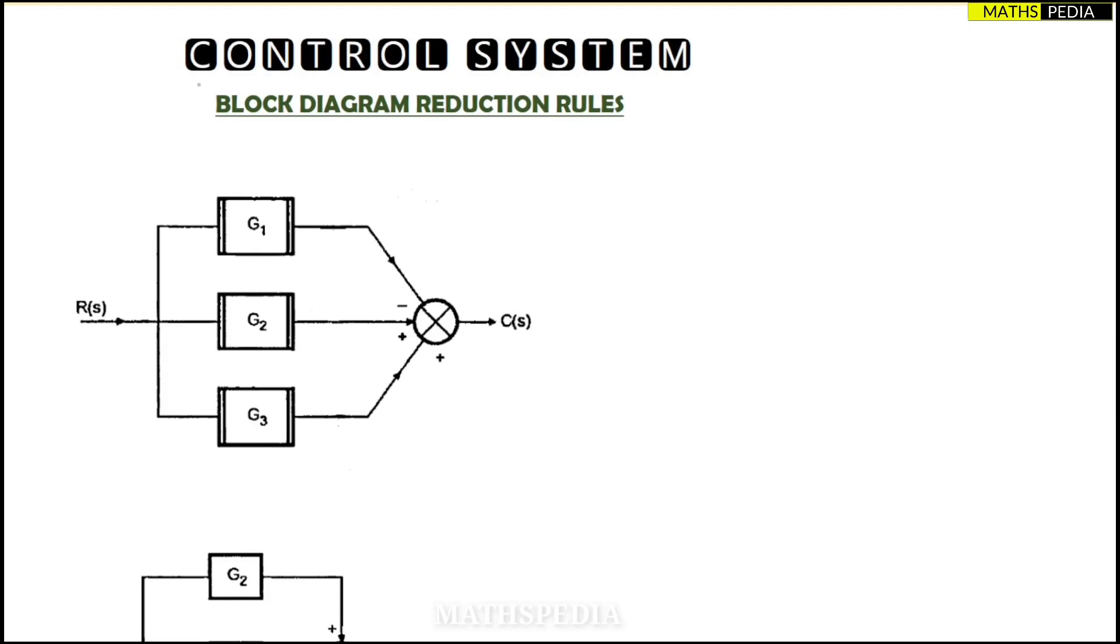In this video, we will be discussing the control system block diagram reduction rules number three. The third rule basically says that for the blocks in parallel, whenever the blocks are in parallel, what you have to do...